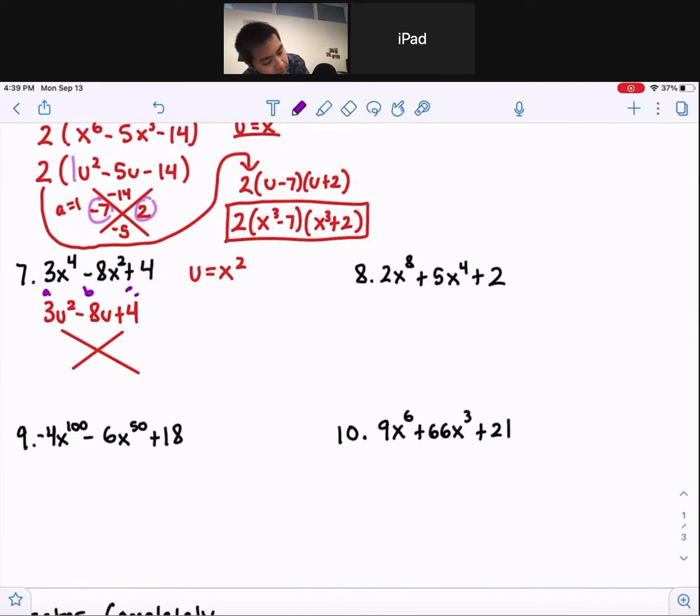a times c is 3 times 4. I'll write that neater. a times c, 3 times 4 is 12. And our b value is negative 8. The two numbers are negative 6 and negative 2.